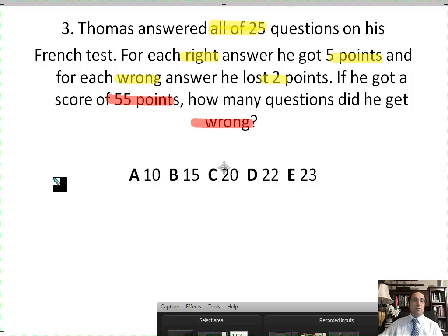So we have 25 questions total. He got some right, and he got some wrong. For every right answer, he gets five. So times five, the number of right questions times five. And for every wrong answer, he loses two points. So the number of wrong answers times two.